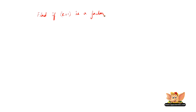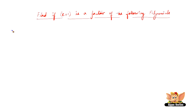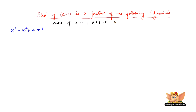Let us find if x plus 1 is a factor of the following polynomials. The first of them is x cubed plus x squared plus x plus 1. Before we go on to this, let us find the zero of x plus 1, which is x plus 1 equals 0, and therefore x equals minus 1. Therefore, the zero of x plus 1 is minus 1.